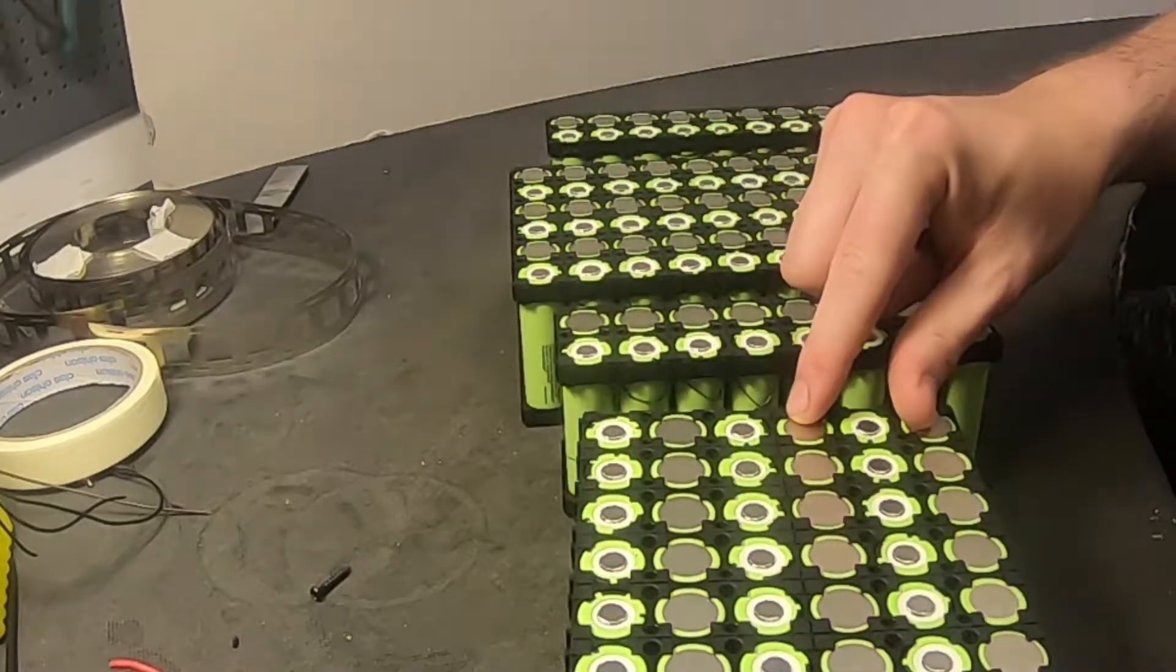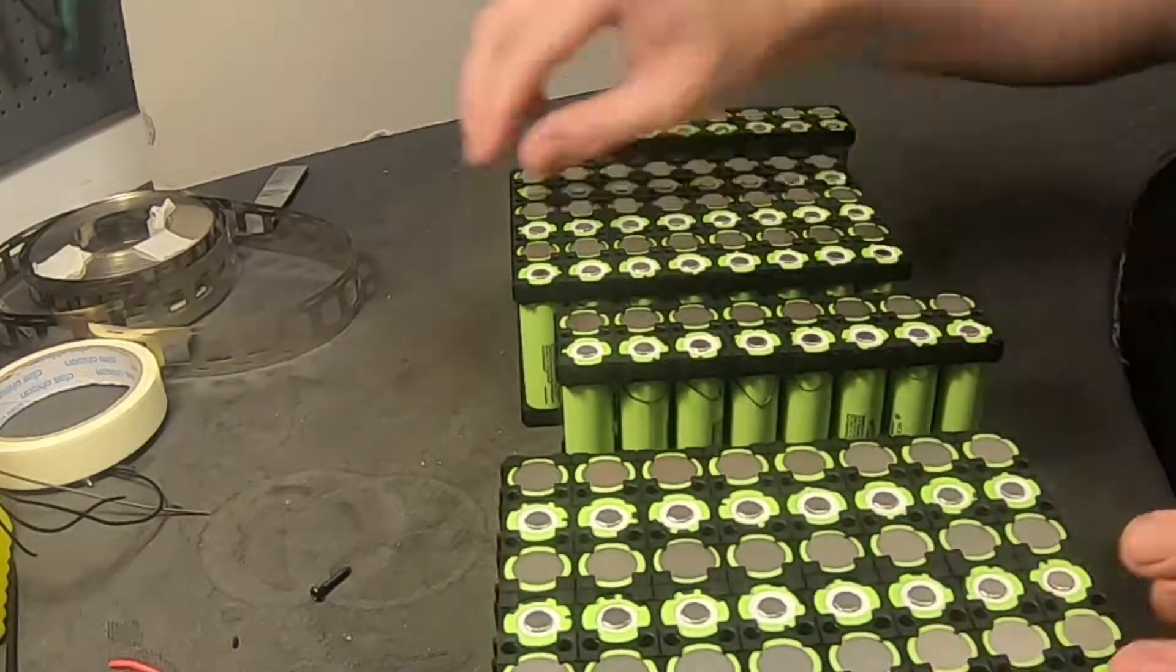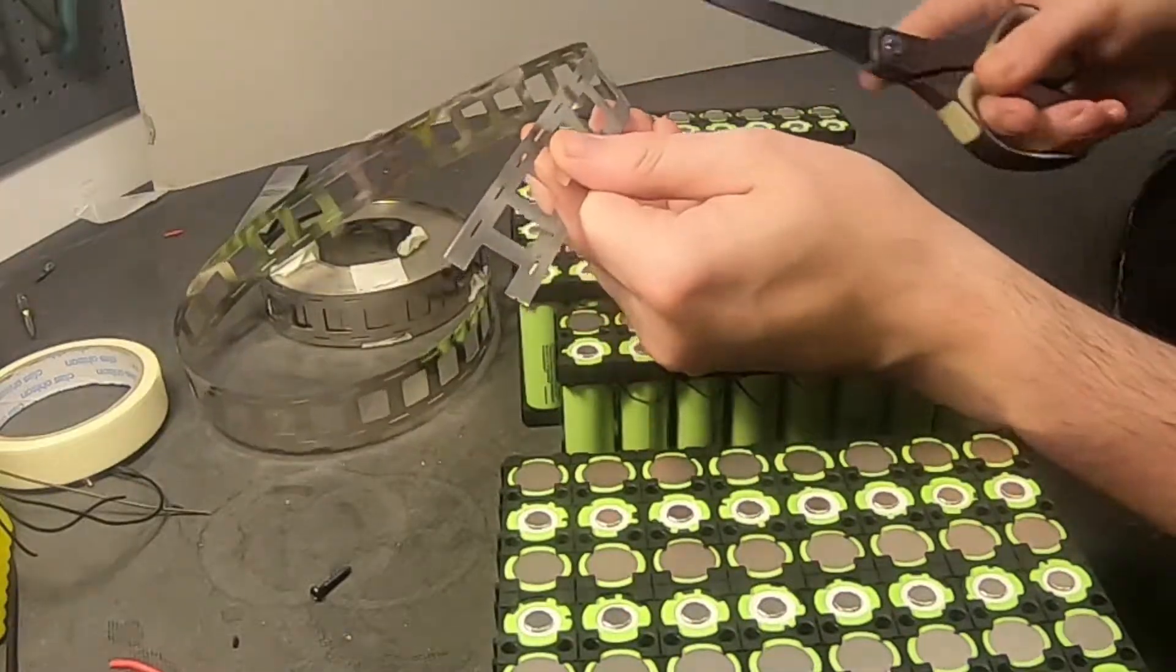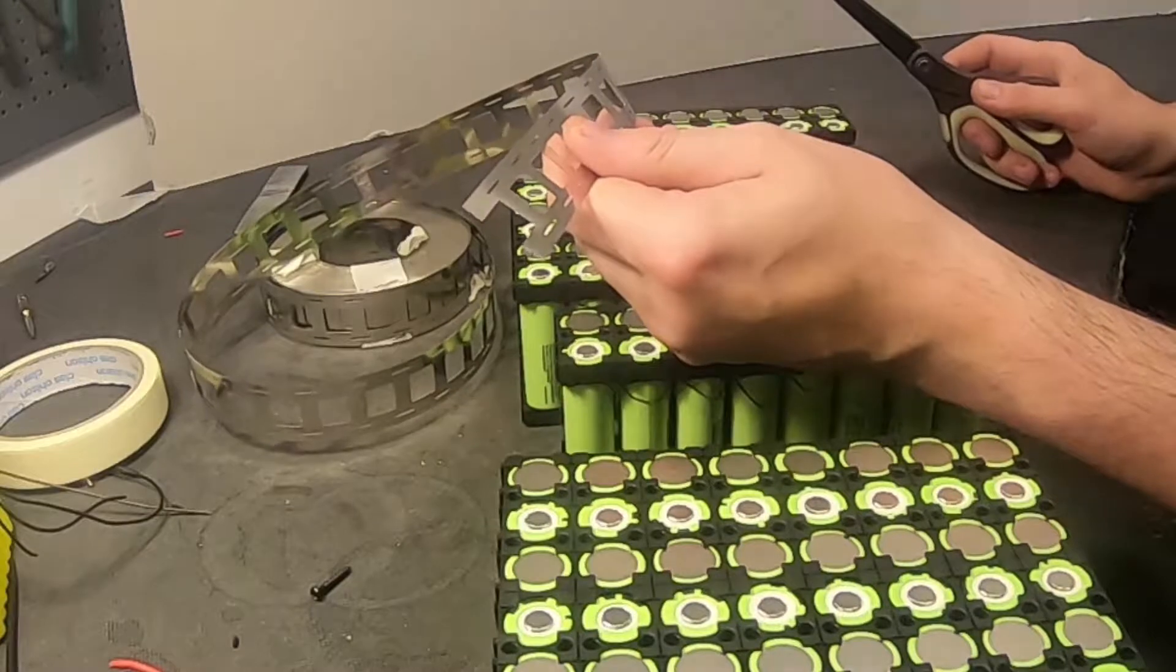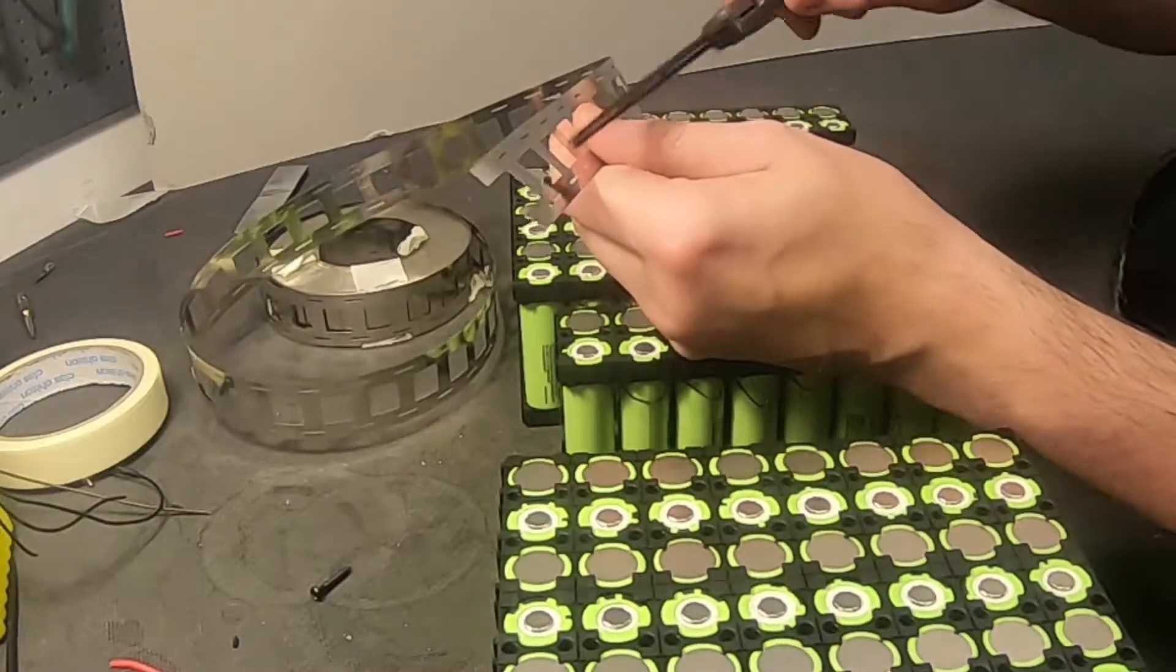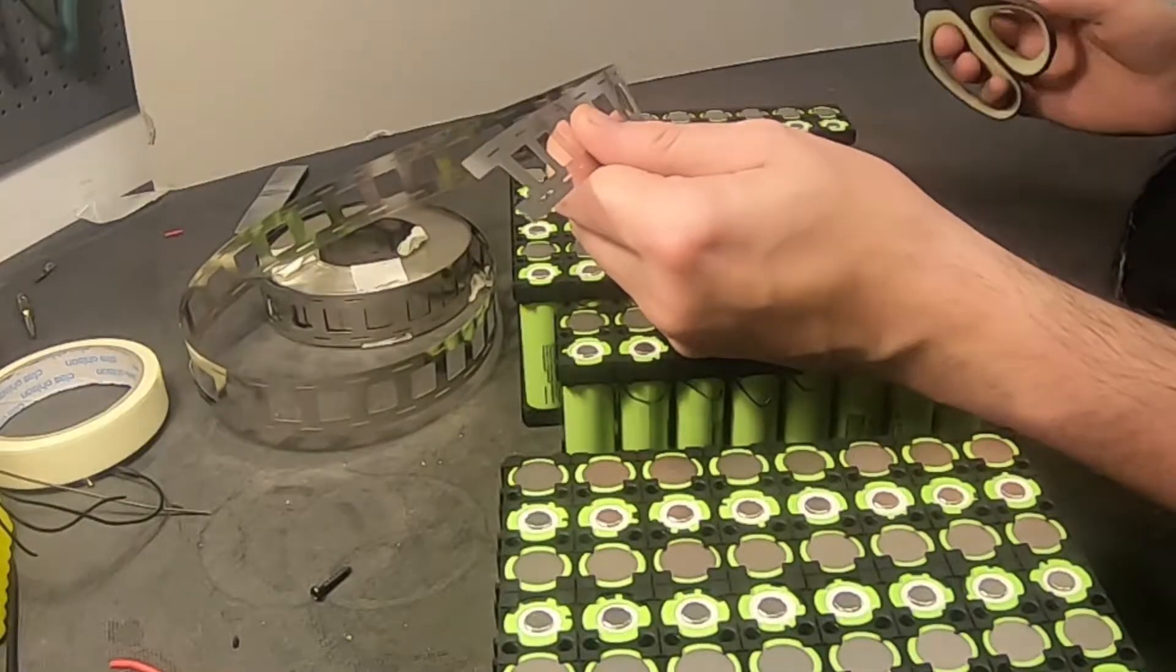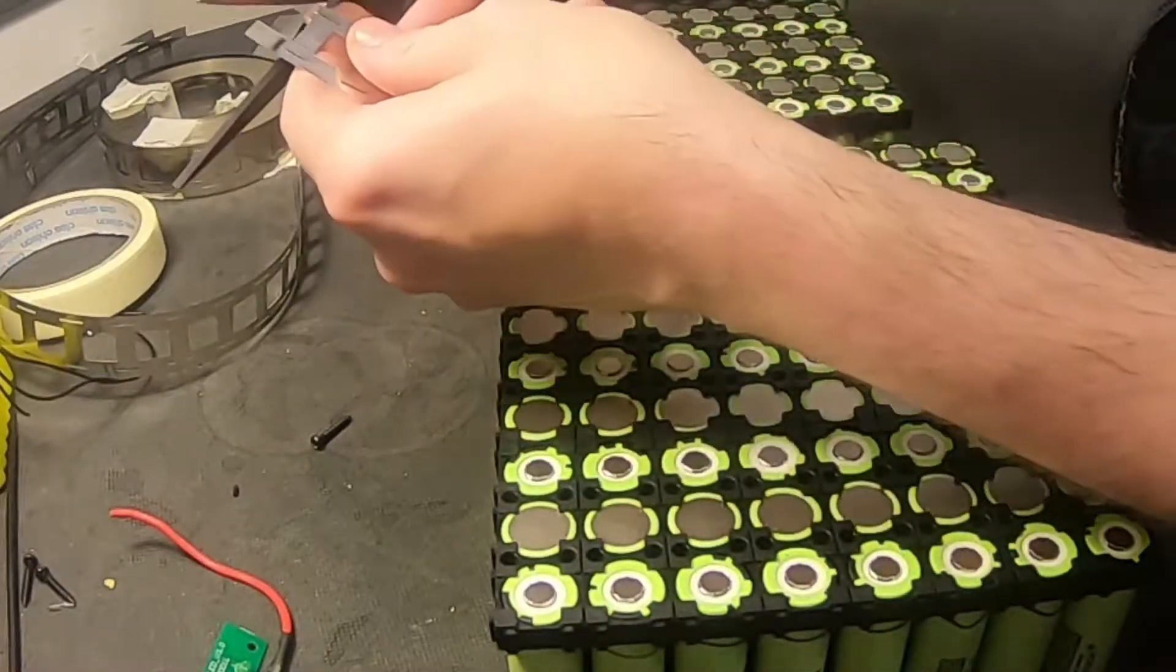When building high amp battery packs, I use these three pre-cut nickel strips that are actually made for this kind of cell holders. These are like 7 millimeters—they work with almost all of these holders. And I like to cut off one of these.